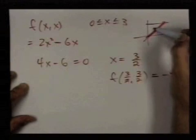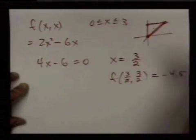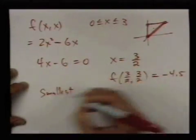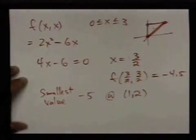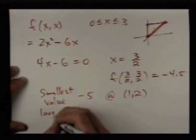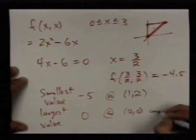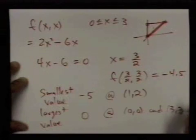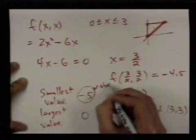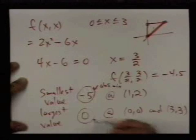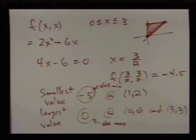The smallest value was -5 and it occurred at the point (1,2). The largest value was 0 and this occurred at the origin (0,0) and at (3,3). So -5 is the absolute minimum and 0 is the absolute maximum of the function I started with on this triangular region. And I'll stop there.